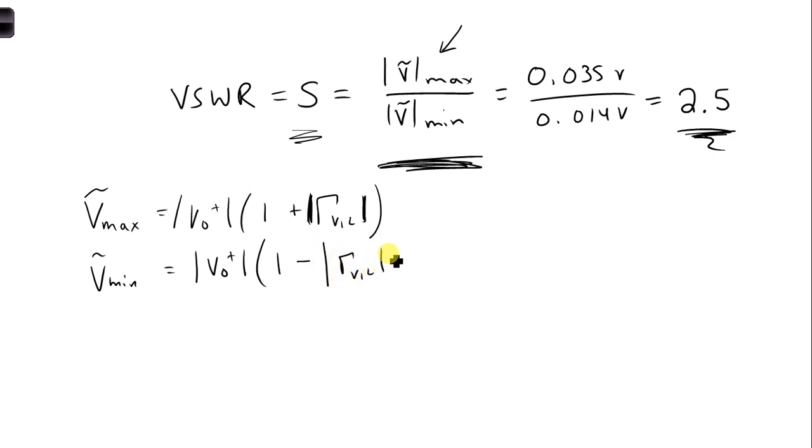And since both of the V naught pluses show up in both the numerator and the denominator, they would cancel. So another way to write S is just what's in the inside here. So we have 1 plus voltage reflection coefficient magnitude over 1 minus the voltage reflection coefficient at the load.